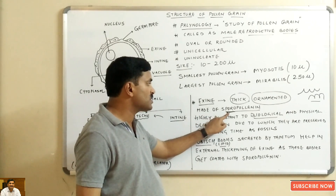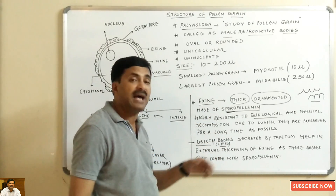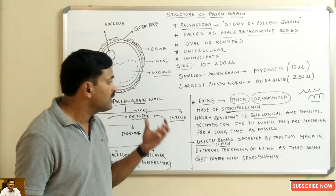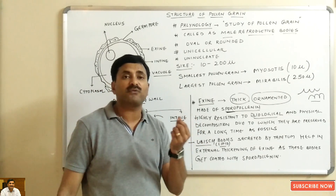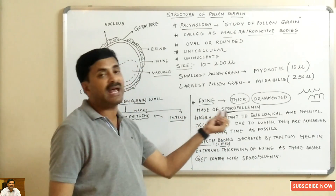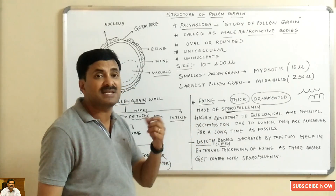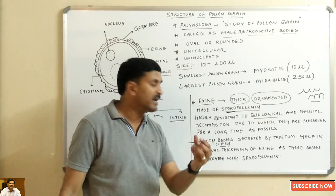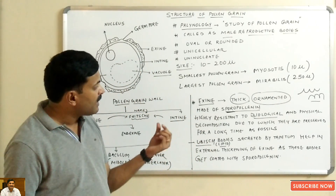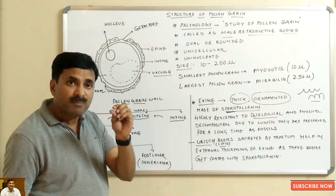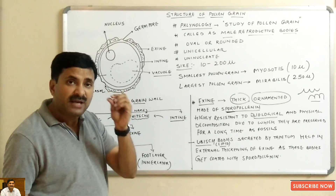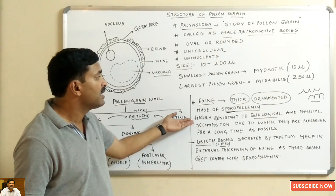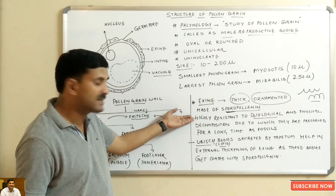Sporopollenin is a highly resistant substance — it is not easily decomposed. That is why pollen grains are preserved for a long time as fossils. Pollen grains are very small, but they are not destroyed because they have a resistant layer around them known as the exine.